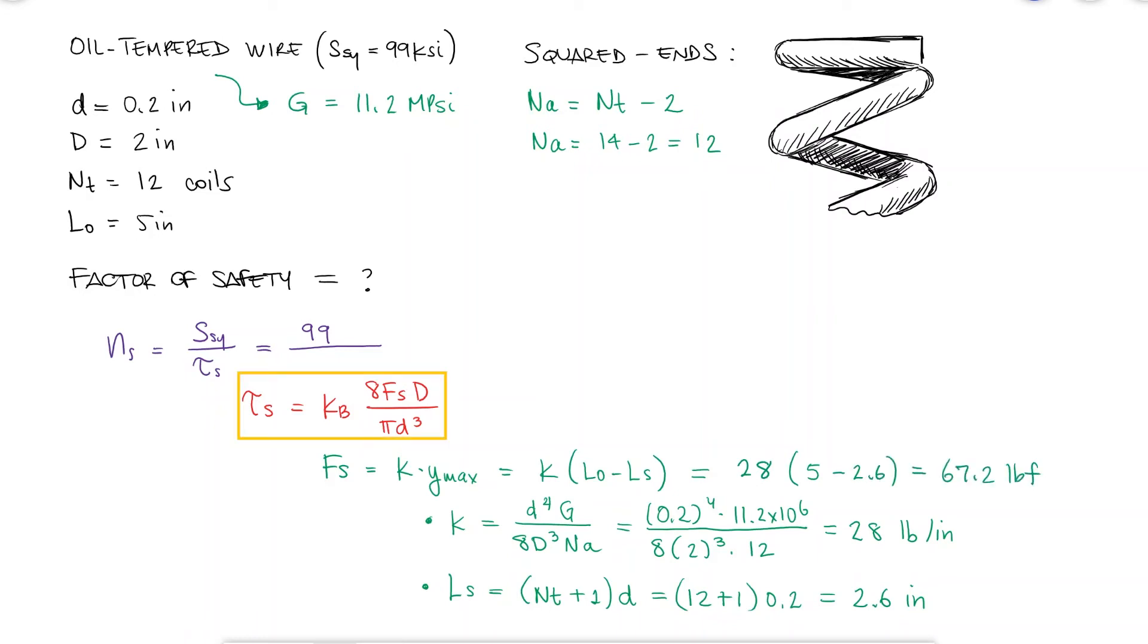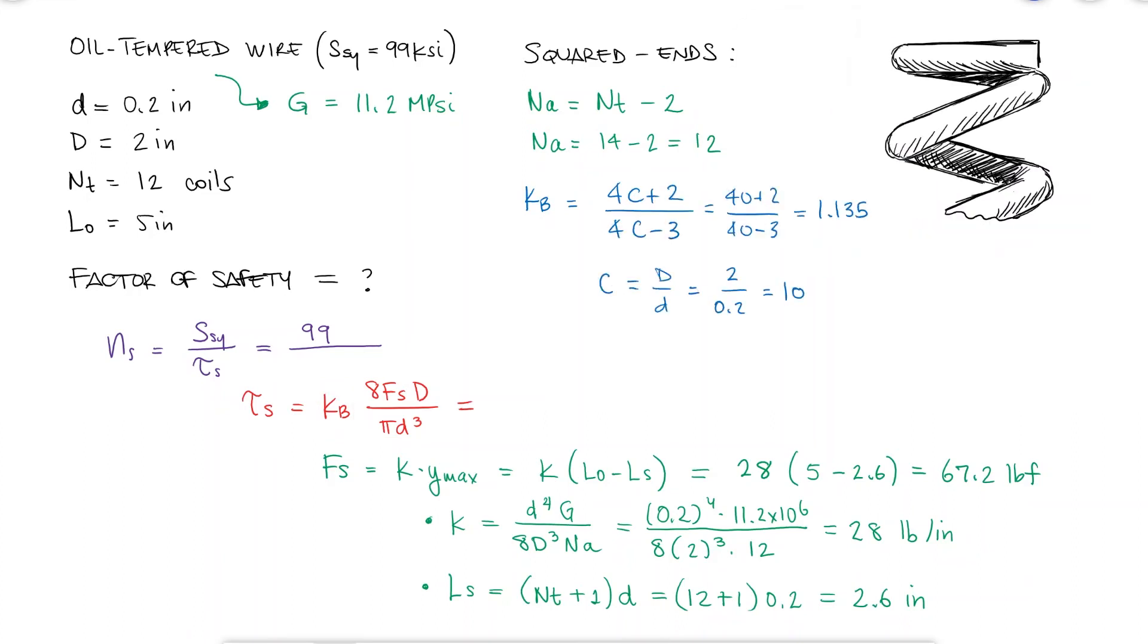The only thing we're missing is the curvature correction factor Kb, which depends on the spring index C. The shearing stress is therefore 48.56 KSI, and the factor of safety 2.04.